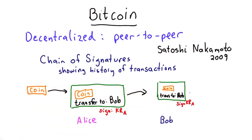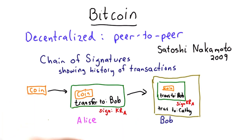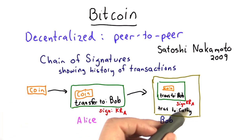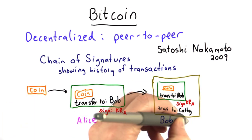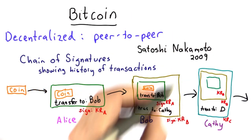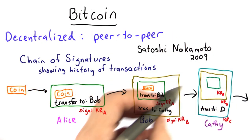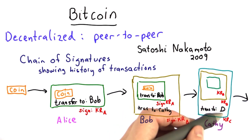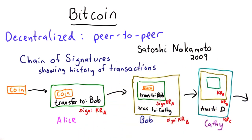Then she sends that to Bob. Bob can verify the signature. For Bob to transfer the coin, he'll add a transfer to Cathy to that, and then sign the whole thing with his private key. Now Cathy would do the same thing — take everything that Bob sent, add a transfer message to it, and sign the whole thing with her private key.